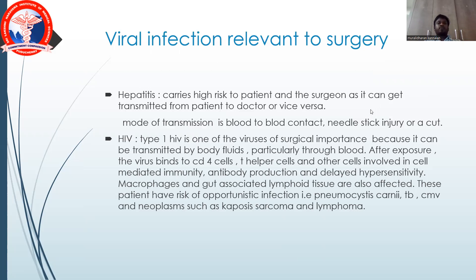Viral infections relevant to surgery include hepatitis, which carries a high risk to both patient and surgeon as it can be transmitted blood-to-blood; a needlestick injury or cut is sufficient for transmission. HIV type 1 is of surgical importance as it is transmitted by body fluids, particularly blood. After exposure, the virus binds to CD4 T-helper cells and other cells involved in cell-mediated immunity, antibody production, and delayed hypersensitivity. These patients have a high risk of opportunistic infections such as Pneumocystis carinii, tuberculosis, cytomegalovirus, and neoplasms such as Kaposi's sarcoma and lymphoma.